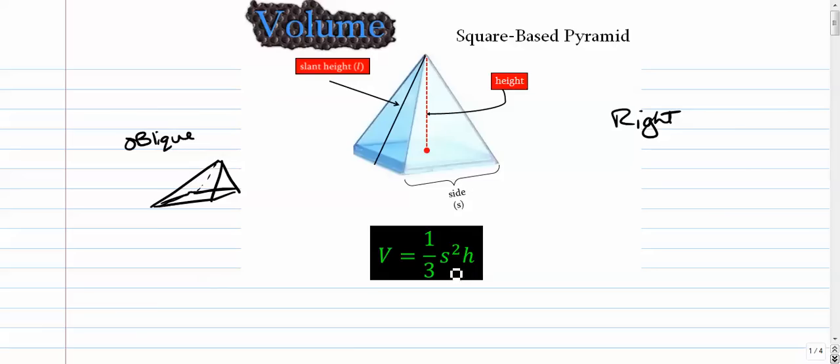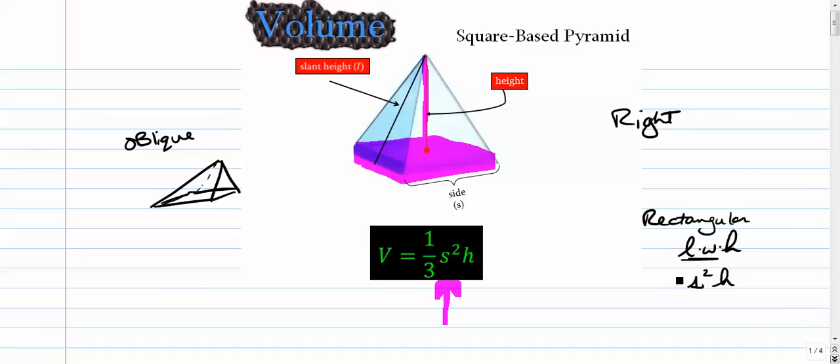But in any event, all you want to do for the volume of this thing is take the area of the base, take the area of this square, which is side times side, so it's s times s, multiply it by the height, and then divide it by 3, or multiply it by a third. So it's very similar to, if you think about it, the volume of a rectangular prism. The rectangular prism volume was simply length times width times height. Well, if both the length and the width were the same, then that's just s squared times height.